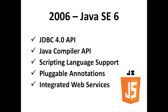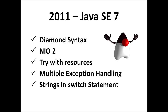Java SE 6 was released in December 2006 with integrated web services, scripting language support, Java Compiler API, pluggable annotations, and JDBC 4.0 API. Pluggable annotations allow programmers to write annotation processors so that code can be analyzed semantically before Javac compiles. Java SE 6 also unifies the Java plugin technology and Java Web Start engines, and the installation of Java Web Start applications got a much-needed makeover.